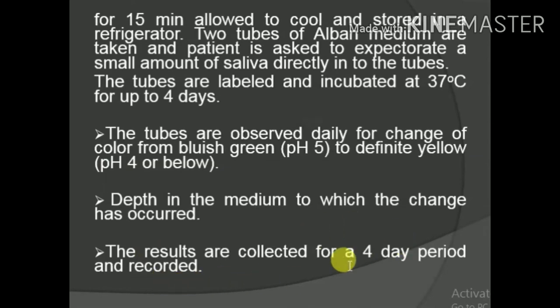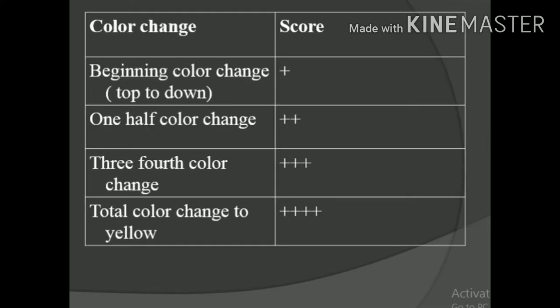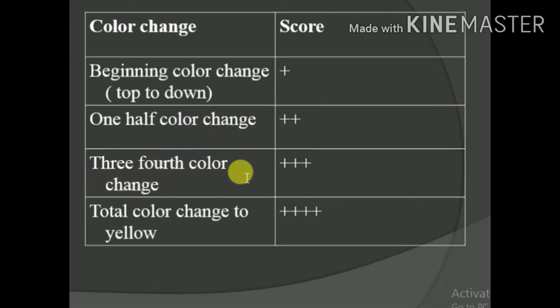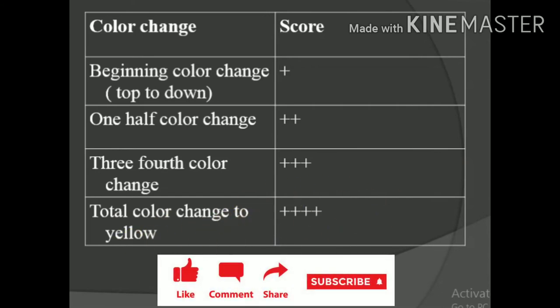Results are recorded over a 4-day period. If color just begins to change, the score is 1+. If half the tube changes color from green to yellow, the score is 2+. If three-fourths changes color, the score is 3+. If the whole tube changes color, indicating acid bacteria are fully prevalent, the score is 4+.